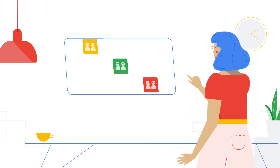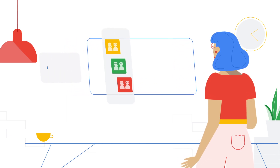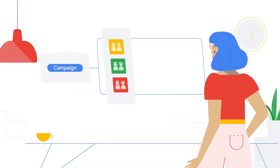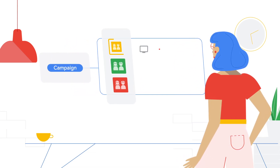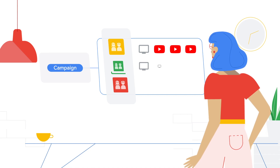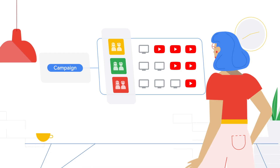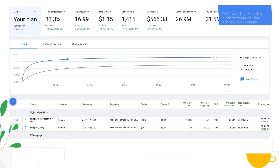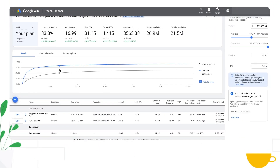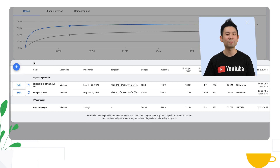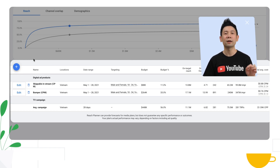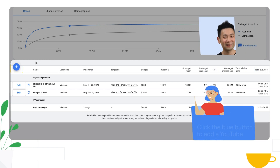Then we reflect the combined TV and YouTube reach of the campaign against non and light TV viewers. Here's one of my favorites — the campaign table. This allows you to see the specific breakdowns of the individual YouTube campaign for the plan specifically.